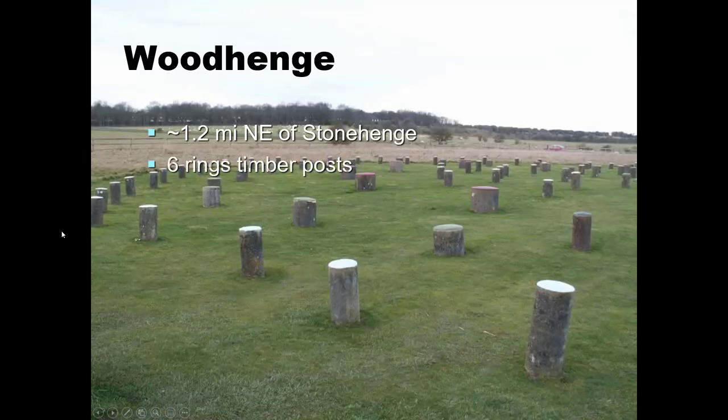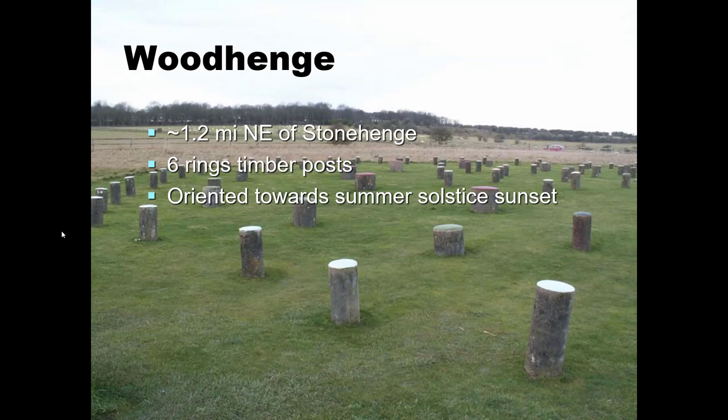Just south of Durrington Walls is a very small henge called Woodhenge — about a mile and a half northeast of Stonehenge. Based on post holes carved right into the chalk, it seems to be a series of six concentric rings of timber posts. There also seems to be an area with a larger, more irregular and deeper hole, suggesting it may have held a standing stone that was oriented towards the sunset on the summer solstice on June 21st.